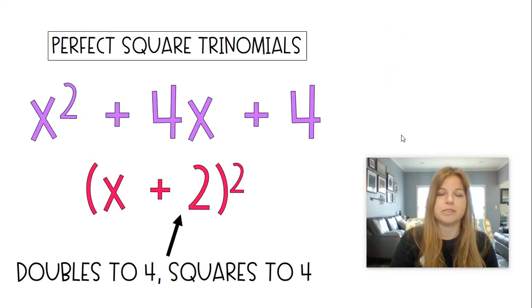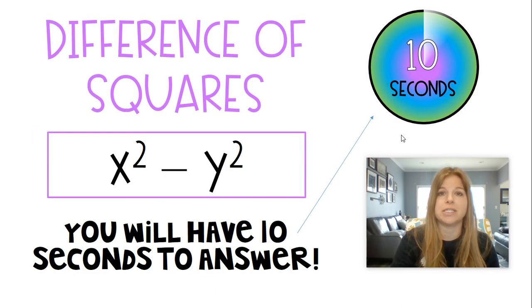x squared plus 4x plus 4. Time's up. x plus 2 squared. 2 doubles to get 4 and it squares also to get 4.